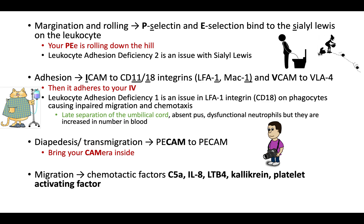It's not the adhesion step as much as the rolling step that is a problem for leukocyte adhesion deficiency 2. A key thing you need to know: if you have a patient and they say there's late separation of the umbilical cord, or they don't have pus, or they have neutrophils but they aren't working — those three things tell you their leukocytes are not adhering. You will have those leukocytes, but they just don't work. The key is that late separation of the umbilical cord.